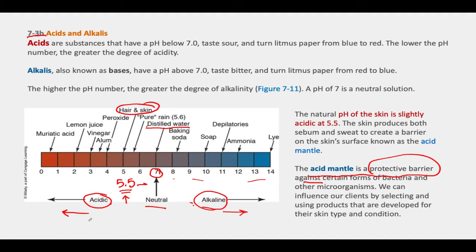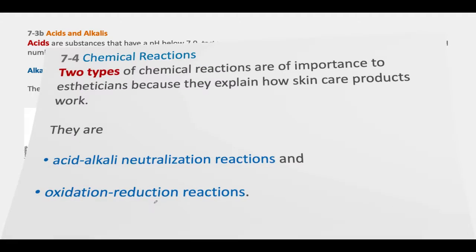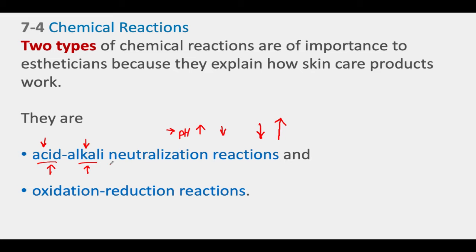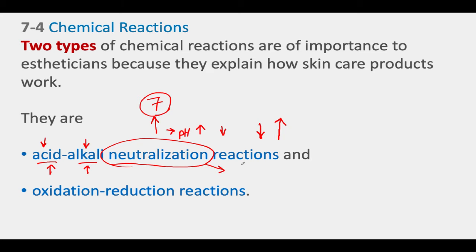What we see is almost like a tug of war: alkali is pulling the pH numbers higher and acid is pulling in the opposite direction. The process is called neutralization. So even though we talk about acid-alkali neutralization, while neutralization literally implies pH 7, our actual target is the acid mantle's pH of 5.5.